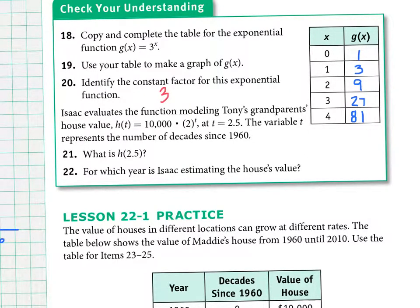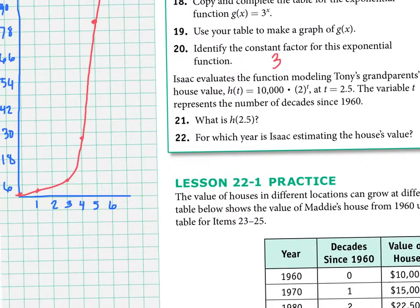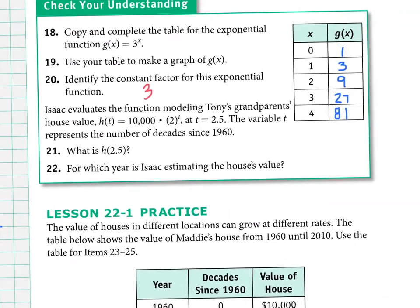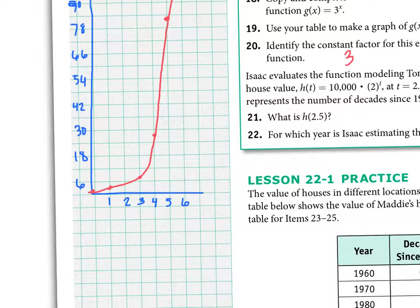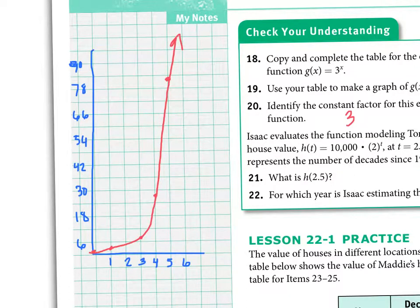Here are the answers. For the table: plugging in x = 0, anything to the zero power is 1; x = 1 gives 3; x = 2 gives 9; x = 3 gives 27; and x = 4 gives 81. For the graph, plot those values and you should see the traditional exponential shape — starting off very slow and then skyrocketing after a while.